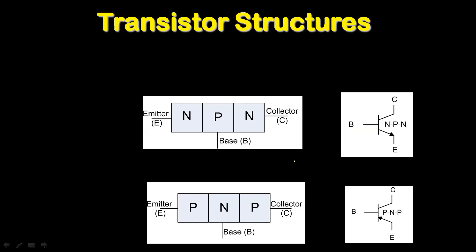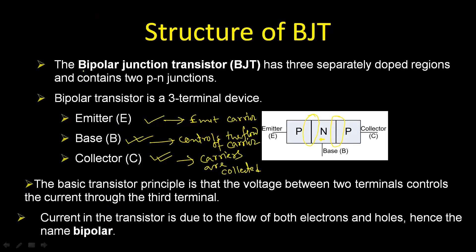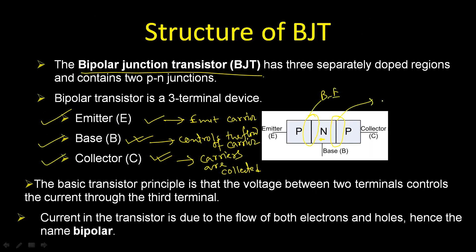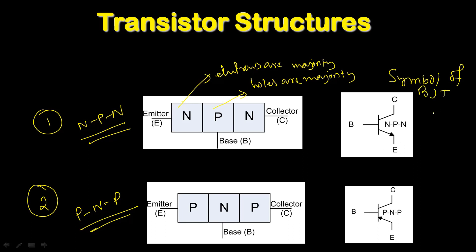There are two types of BJT depending on the doping used. In an NPN transistor, the emitter is N-type, base is P-type, and collector is N-type. In a PNP transistor, the emitter is P-type, base is N-type, and collector is P-type. The BJT has three terminals — emitter, base, collector — and two PN junctions: the base-emitter junction and the base-collector junction.